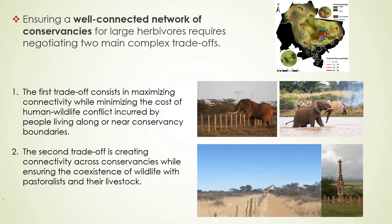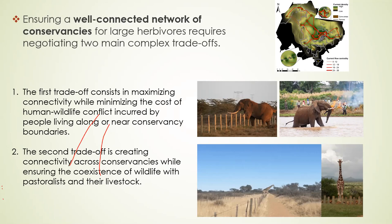The first trade-off we need to think about is how we maximize connectivity while reducing the cost of human-wildlife conflict. This is very critical because we need all these areas for wildlife existence. The second trade-off is creating connectivity across conservancies while ensuring coexistence of wildlife, pastoralists, and their livestock.